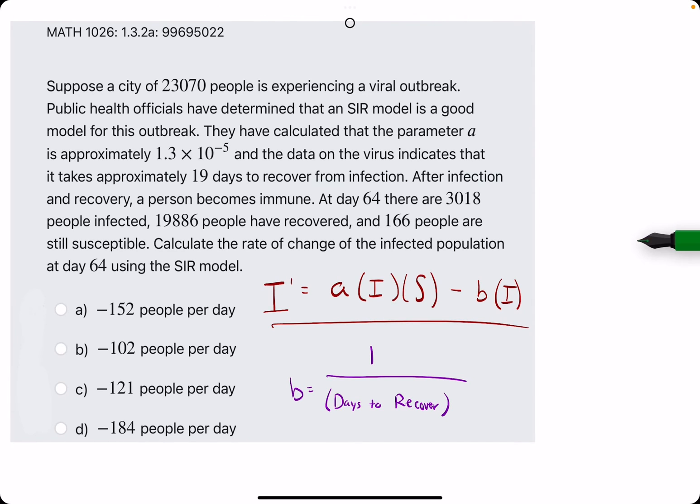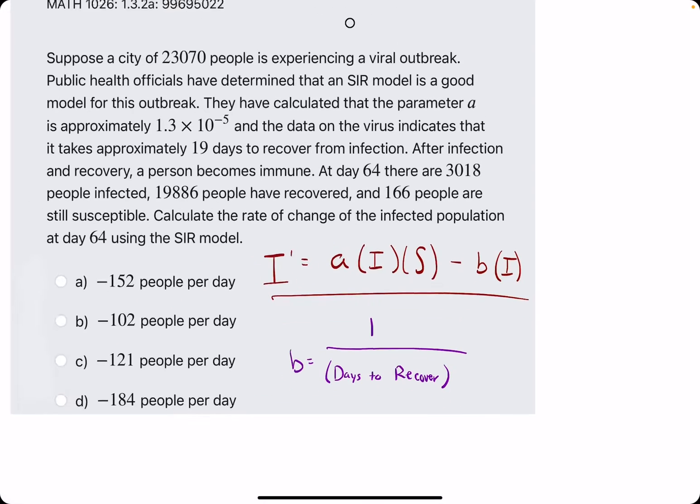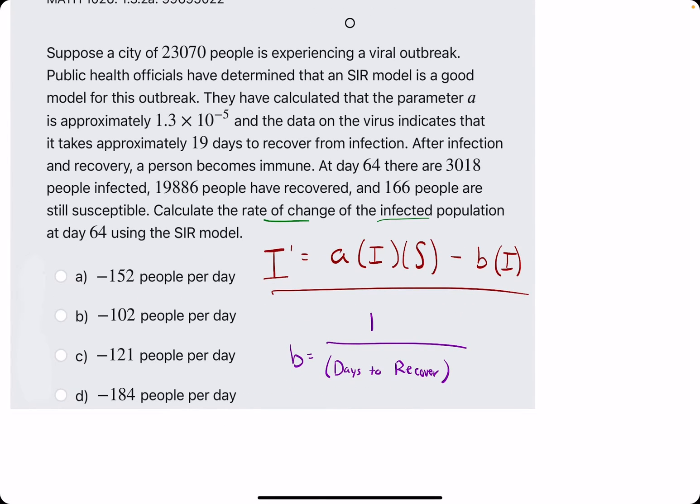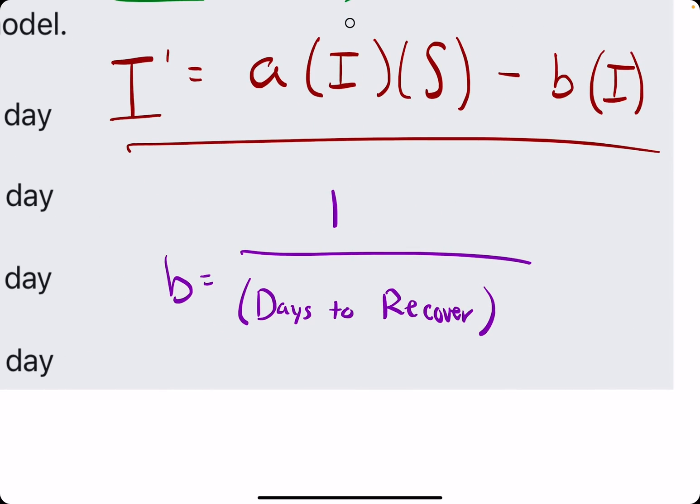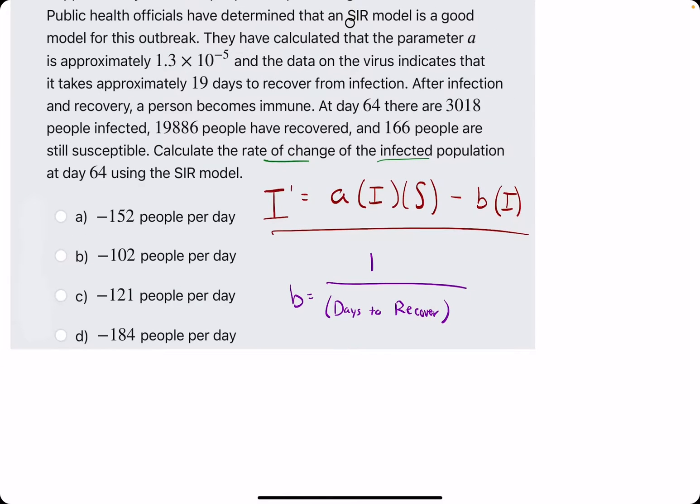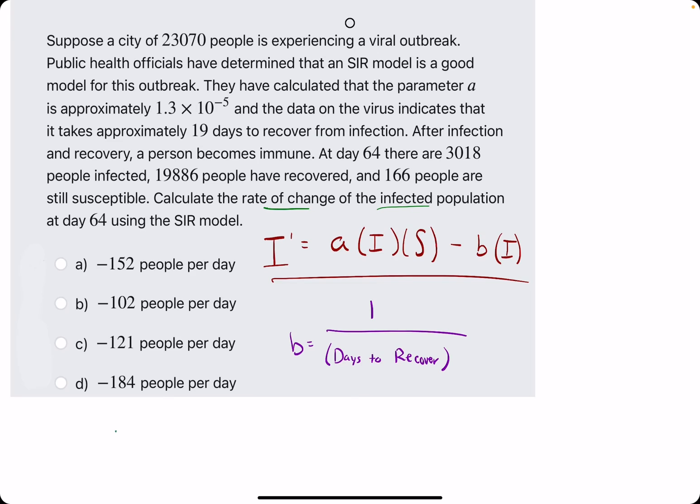Second example for this problem, let's jump right into it. We are finding I prime, the rate of change of the infected population, with the help of B equaling 1 over the days it takes to recover. So let's find these values in order.